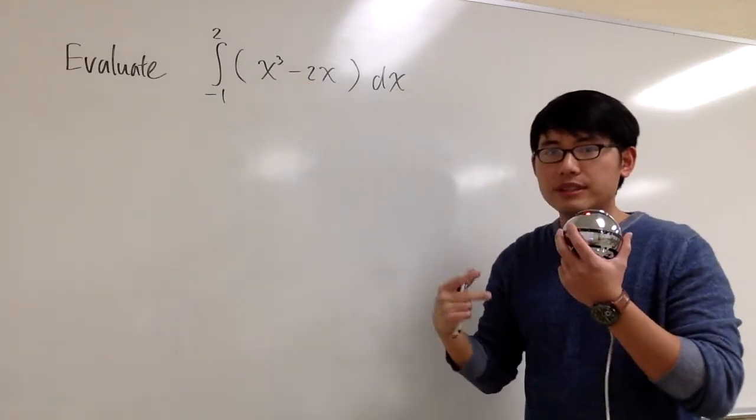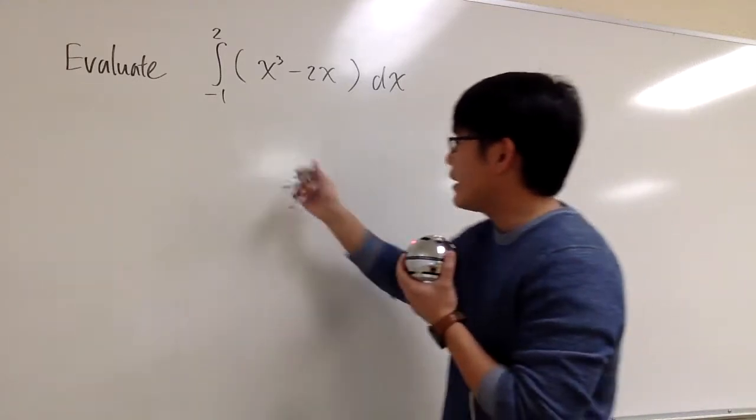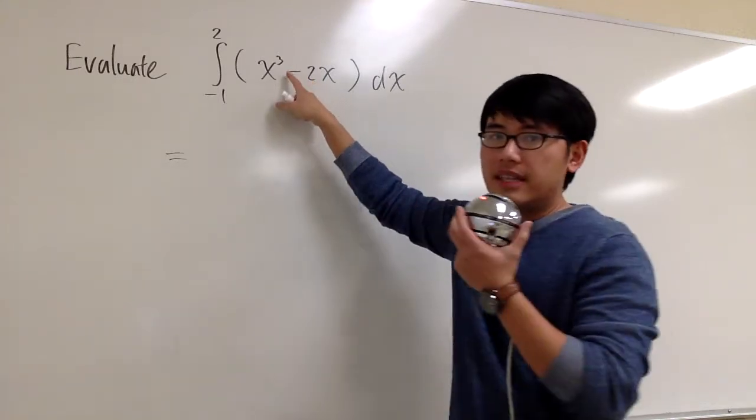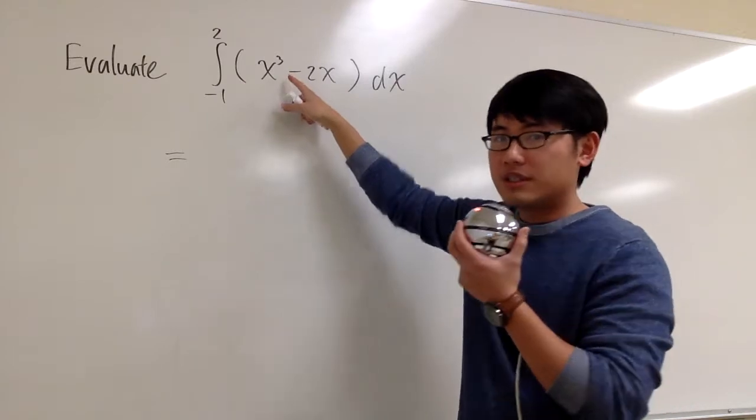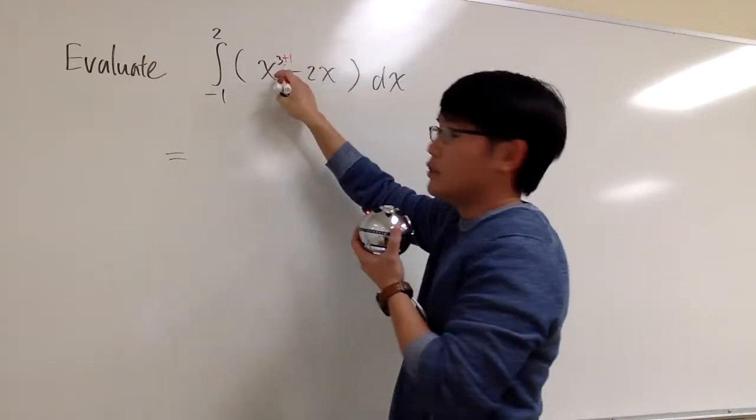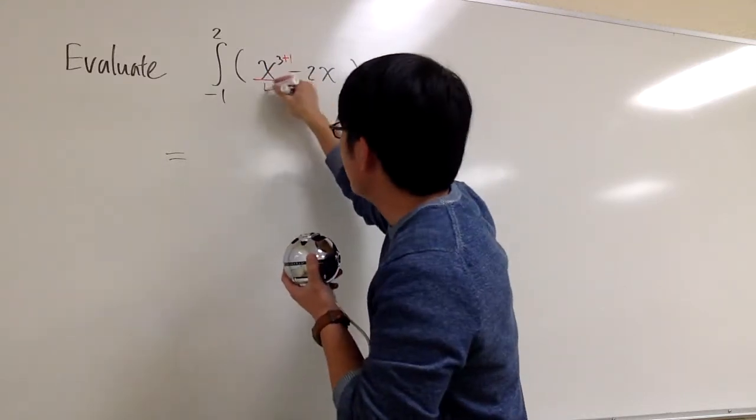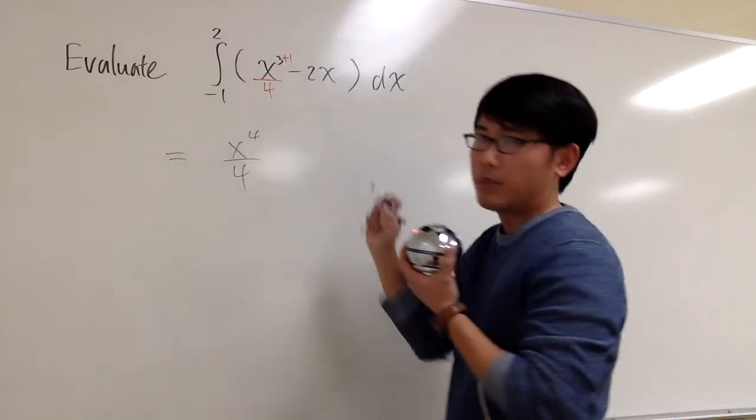So we have to first come up with an anti-derivative, and then plug in numbers, and then subtract. Okay, so for this one, we are looking at this as x to the third power, and nothing else will affect this power, so we can just do the power rule backwards. So we are going to first add 1 to the exponent, and 3 plus 1 is 4. We are going to divide it by that exponent. So divide it by 4. So we are going to get x to the fourth power over 4 for the first part.